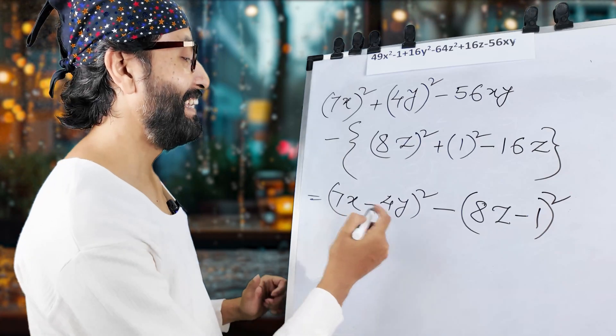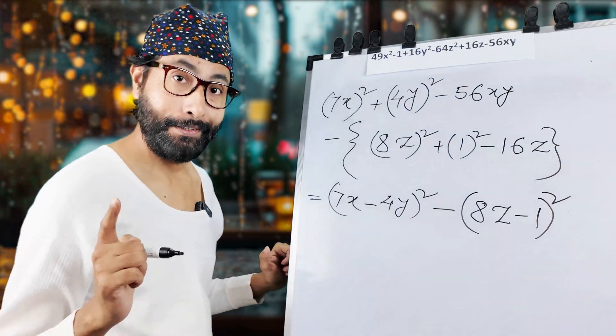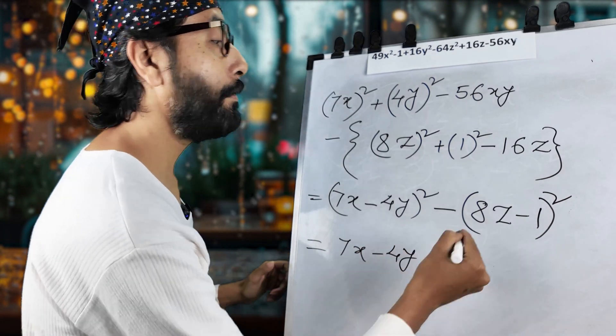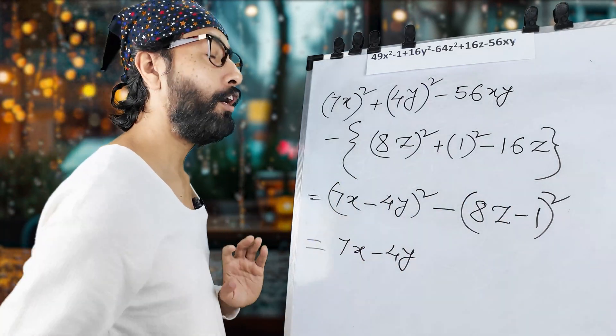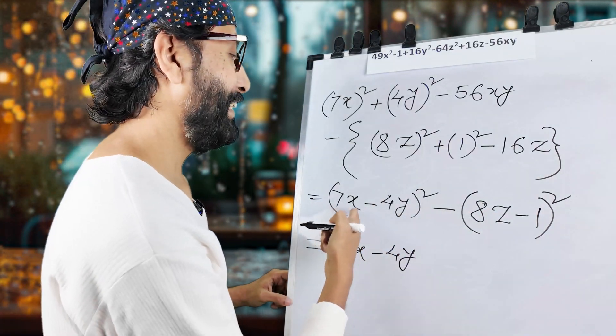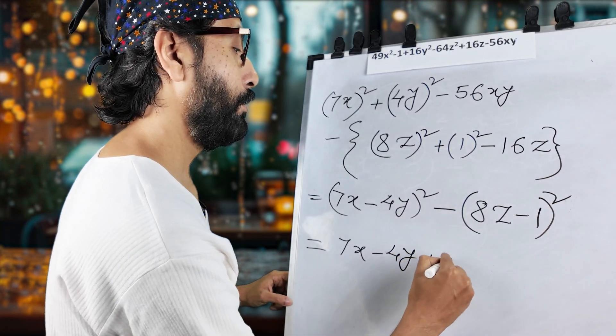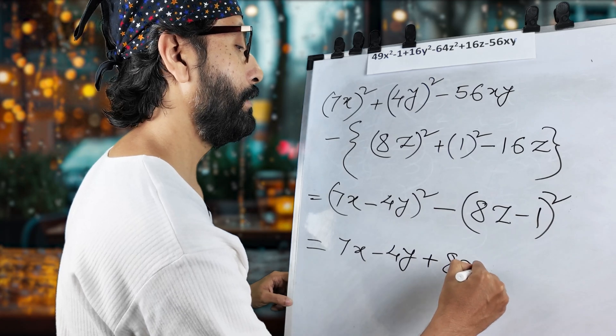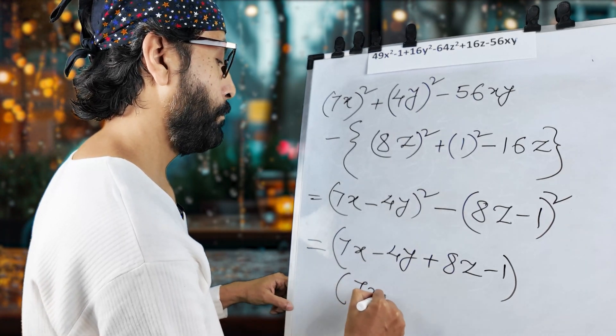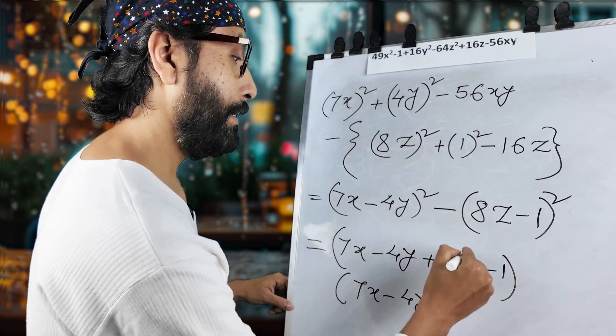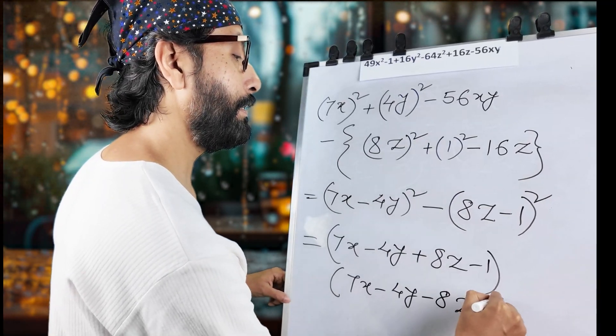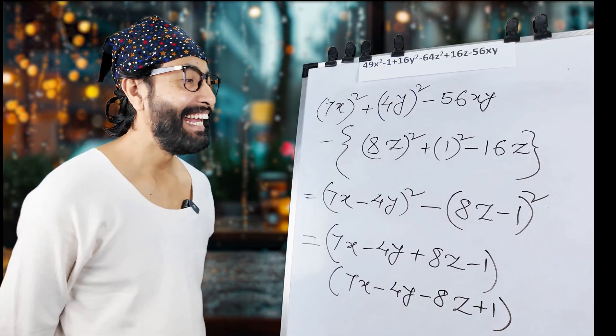Should I do the last part? I'm just doing it for you. Okay. 7X minus 4Y. Now, this time, I'm not taking this earlier because always try to write serially. It will look good. So, 7X. Then 4Y. Then initially. 8Z minus 1. This is one factor. Another factor will be. 7X minus 4Y as it is. But, 8Z will be minus. And, this 1 will be in positive. My friend.